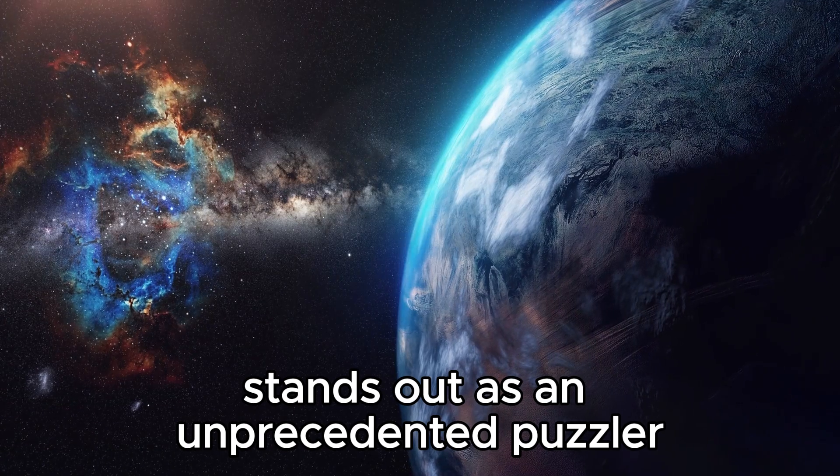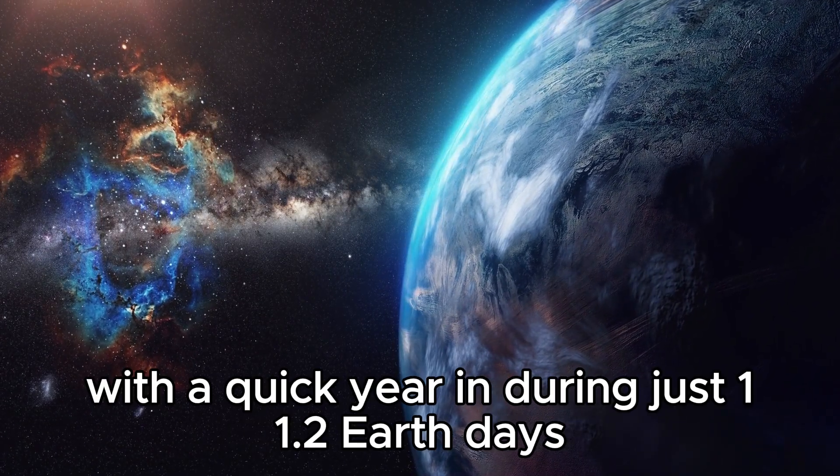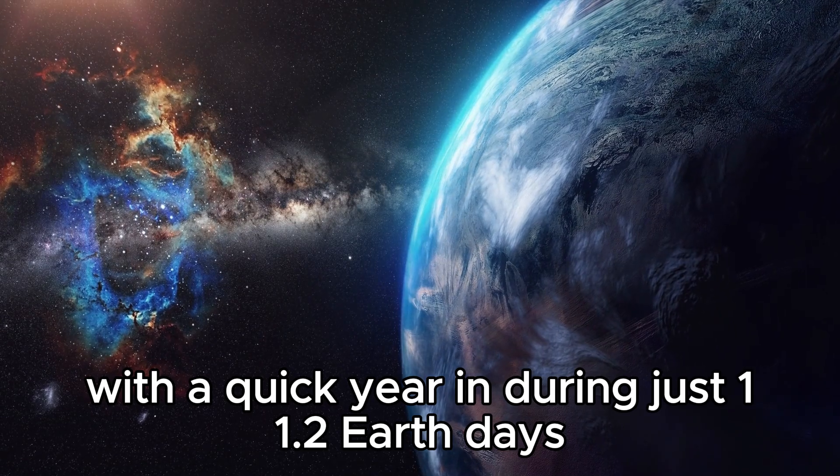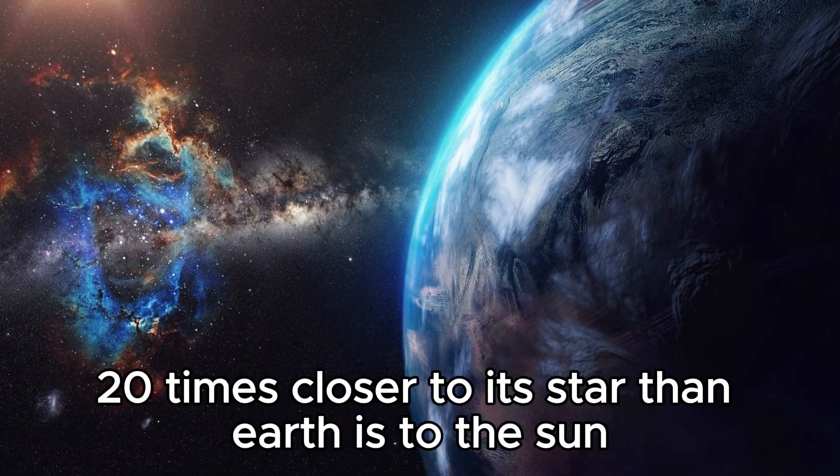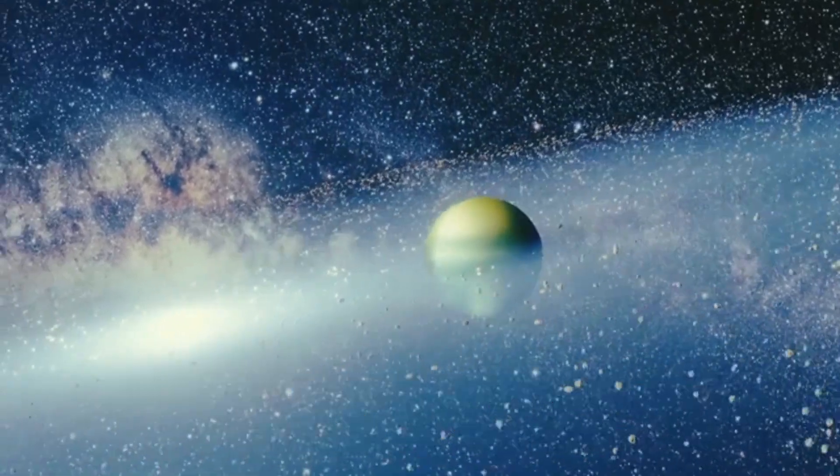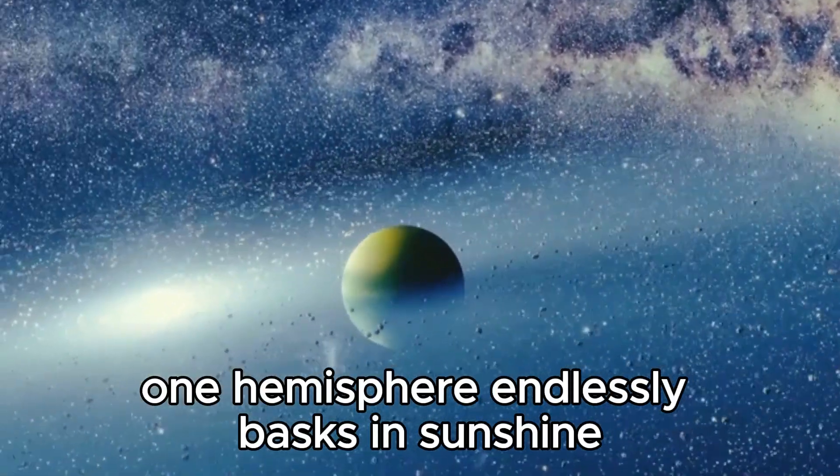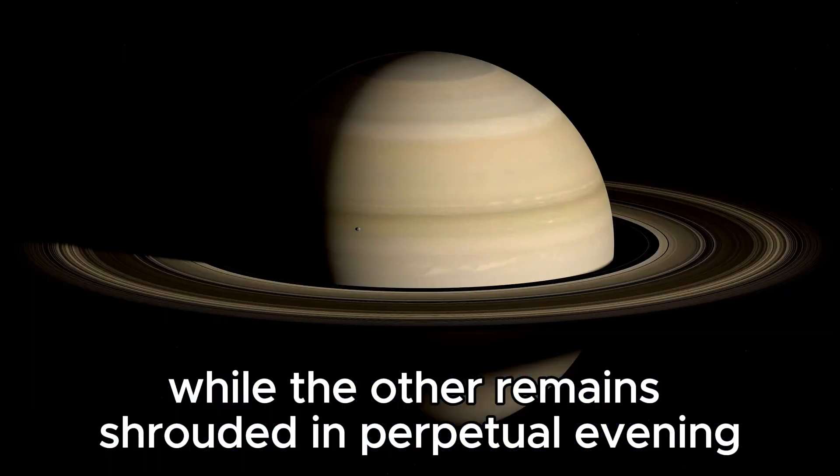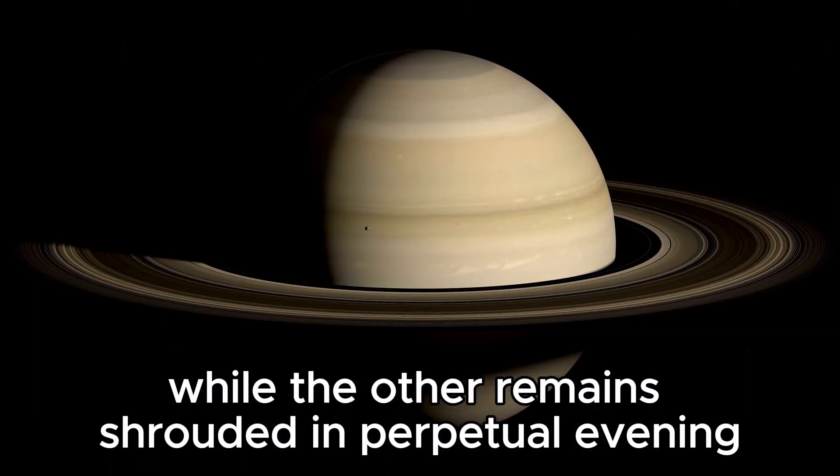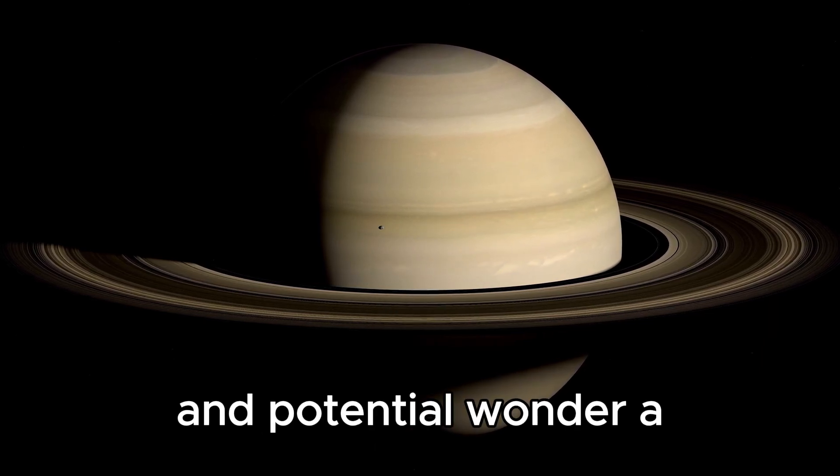In the midst of this vast expanse, Proxima Centauri b stands out as an unprecedented puzzler with a quick year lasting just 11.2 Earth days and an orbit 20 times closer to its star than Earth is to the Sun. One hemisphere endlessly basks in sunshine while the other remains shrouded in perpetual evening, adding to the planet's atmosphere of mystery and potential wonder.